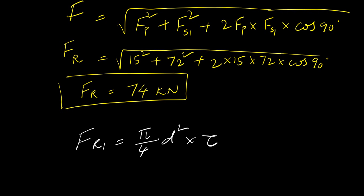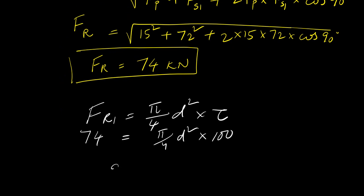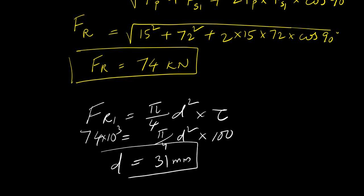Finally, substitute the resultant shear load into the equation FR = (π/4) × d² × τ. So 74 × 10³ = (π/4) × d² × 100. Solving for d gives approximately 31 mm. You can round this to the nearest standard value of 30 or 32 mm. That is the required diameter of the rivet. Thank you for watching, have a good day.